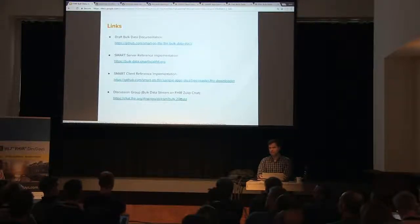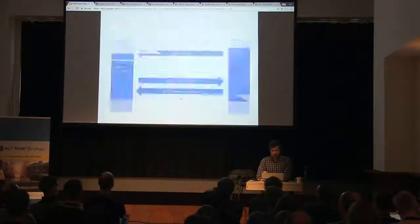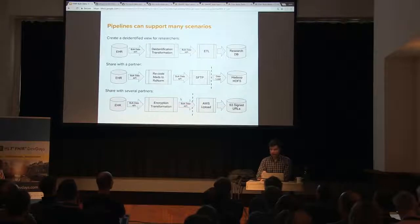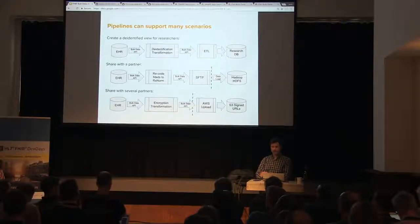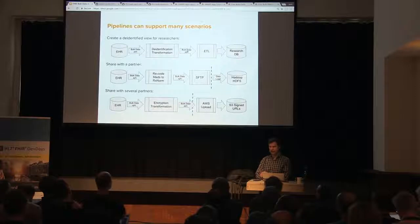On de-identification: I mentioned it in passing as something important but out of scope. We've talked with groups interested in building it as a component of a pipeline — we don't think it's part of the bulk data API, but it should play nicely with it. You could imagine building a transformation step that ingests data through this API and re-exposes it through this API with a de-identification step in the middle.